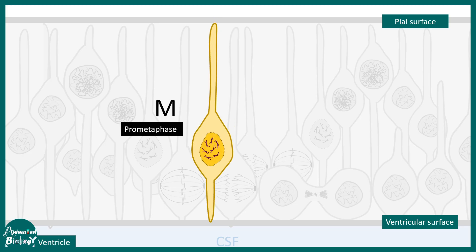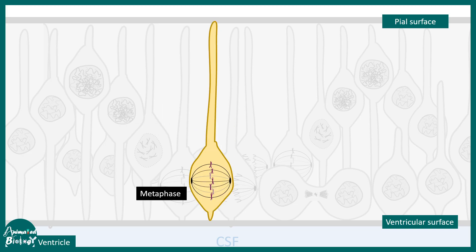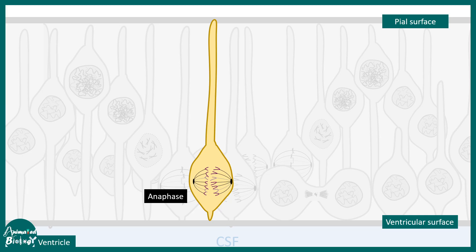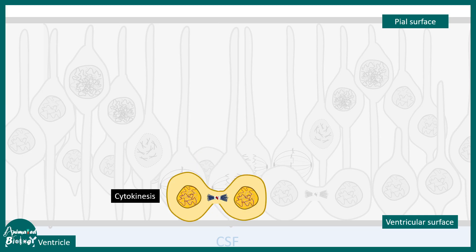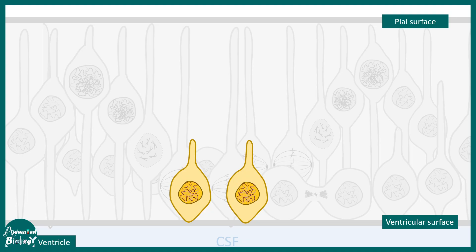At prometaphase and even at metaphase, the cell bodies are exactly touching the ventricular surface. This is one peculiar movement that happens during this process — the metaphase cell bodies exactly line up at the ventricle when they are about to divide. This metaphase radial glia would eventually touch the ventricular surface, undergo anaphase, and eventually cytokinesis, giving rise to two daughter cells.